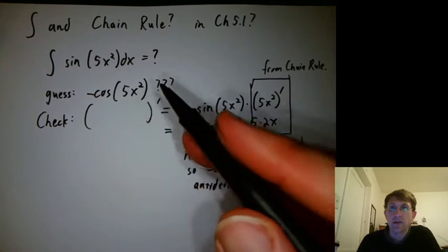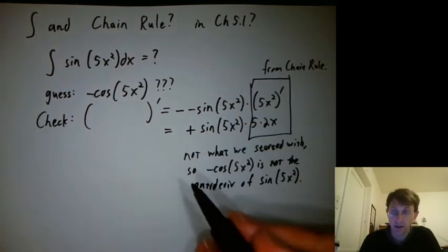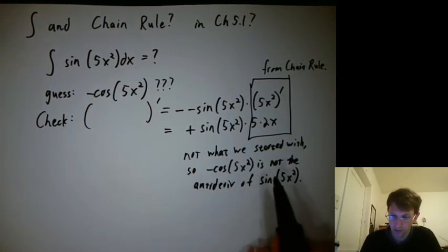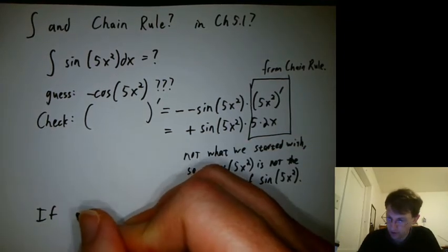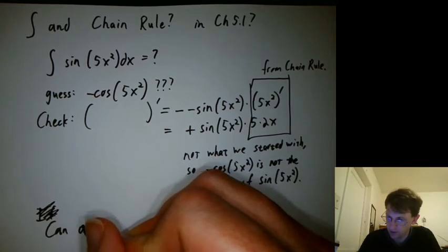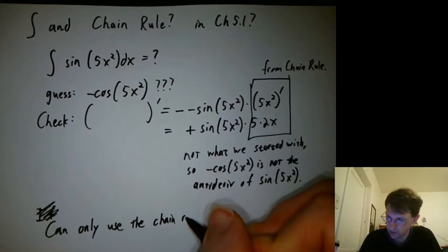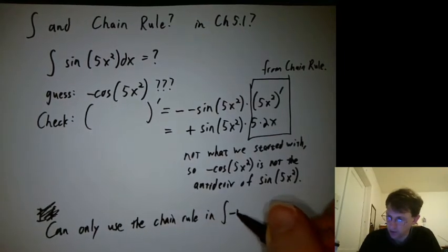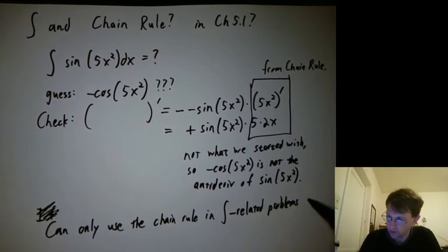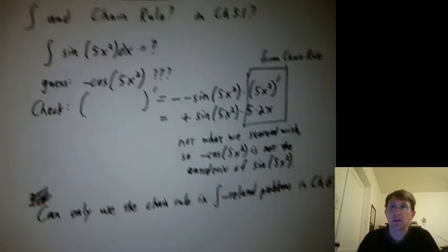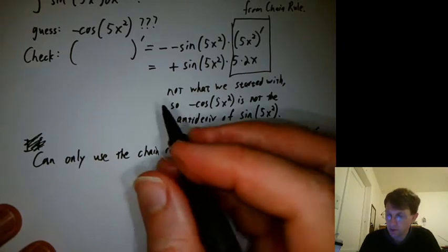if the chain rule ends up involved in an integral problem, we need fancier stuff, and that happens in Chapter 6. You can only use the chain rule in integral related problems in Chapter 6 and later. If an integral seems to need the chain rule, try simplifying first.